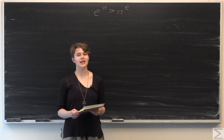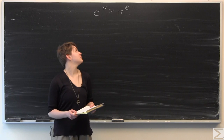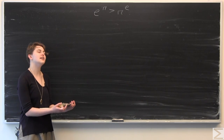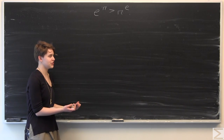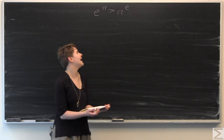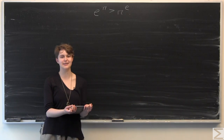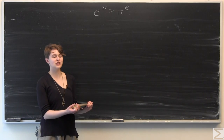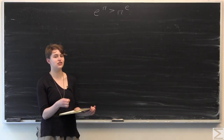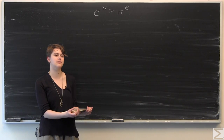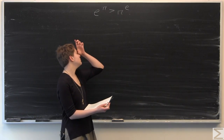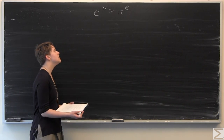This week's Problem of the Week asks you to prove that e to the pi is greater than pi to the e, without using your calculator or anything, because it'd be easy to just type in e to the pi and say it's greater than pi to the e. But there's actually a clever way to do this that involves finding a function with some properties that allow you to prove that e to the pi is greater than pi to the e.